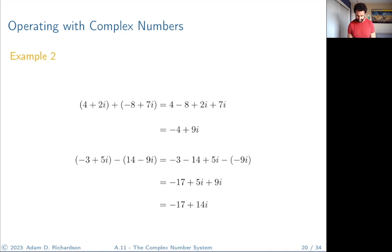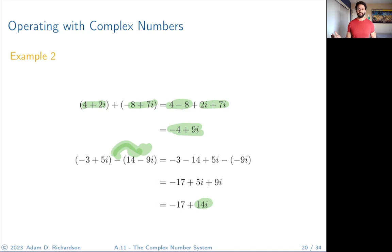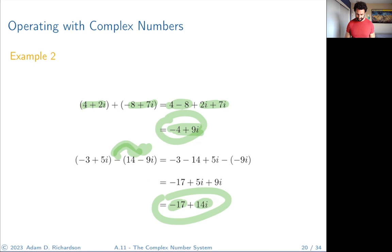Examples: (4 + 2i) + (−8 + 7i) — add real parts: 4 − 8 = −4, add imaginary parts: 2 + 7 = 9, giving −4 + 9i. For subtraction, distribute the negative sign and combine like terms, writing everything with i together and everything without i together. That's the sum and difference of complex numbers.